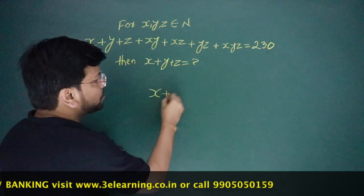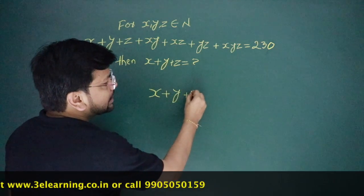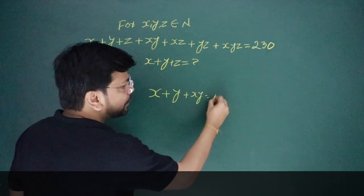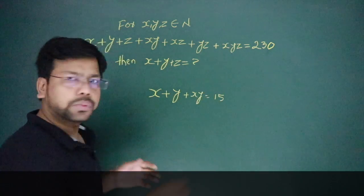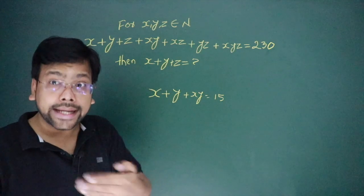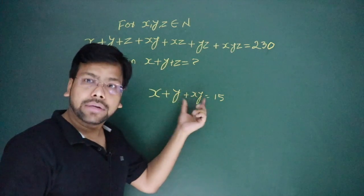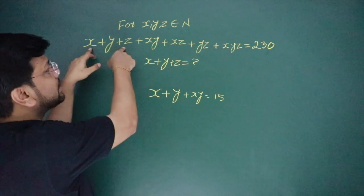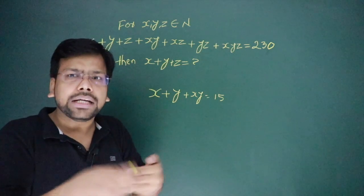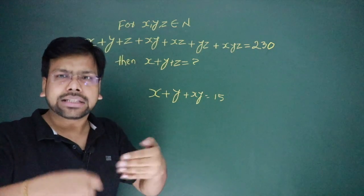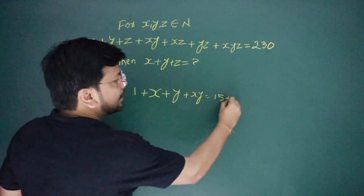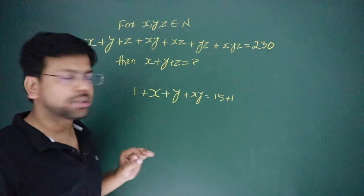If you have X plus Y plus XY, say this is equal to 15, then what is the value of XY if X and Y are integers? If you have X plus Y plus XY type, what is this? Single summation taken two at a time. Here also you see, three variables, so single summation taken two at a time, taken three at a time.